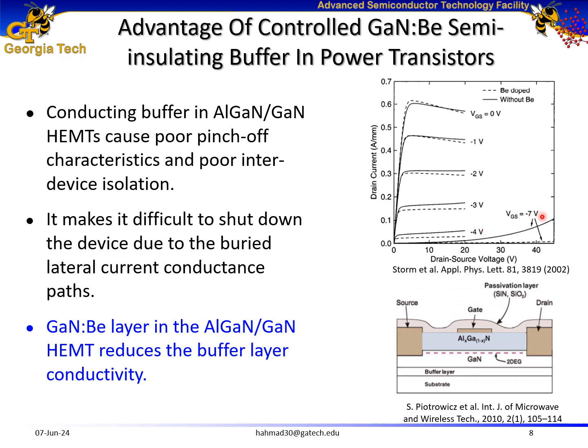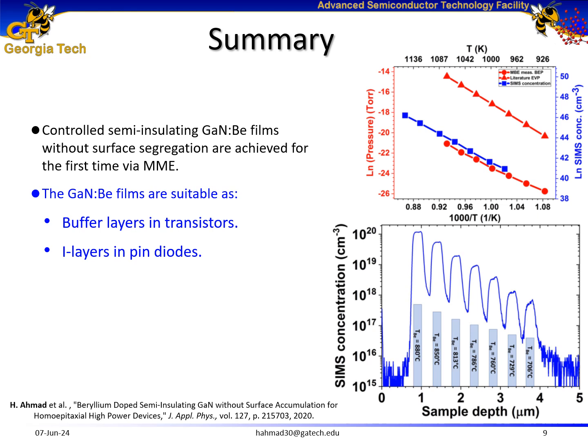Semi-insulating controlled beryllium-doped gallium nitride films are suitable to be used as buffer layers in transistors, because conducting buffer layers would result in poor pinch-off characteristics. Controlled semi-insulating films would improve the pinch-off characteristics of transistors. To summarize the key results, I achieved controlled semi-insulating beryllium-doped gallium nitride films without surface segregation for the first time. These films have the potential to be used as buffer layers in transistors and also as i-layers in PIN diodes.